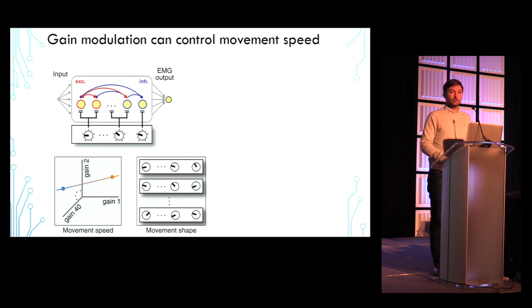A relatively simple possibility is to find a single universal gain manifold that controls movement speeds and combine it with gain patterns associated with different movement shapes, where the product of any one of the shape-specific gain patterns with any point along the gain manifold generates the desired movement at the desired speed.